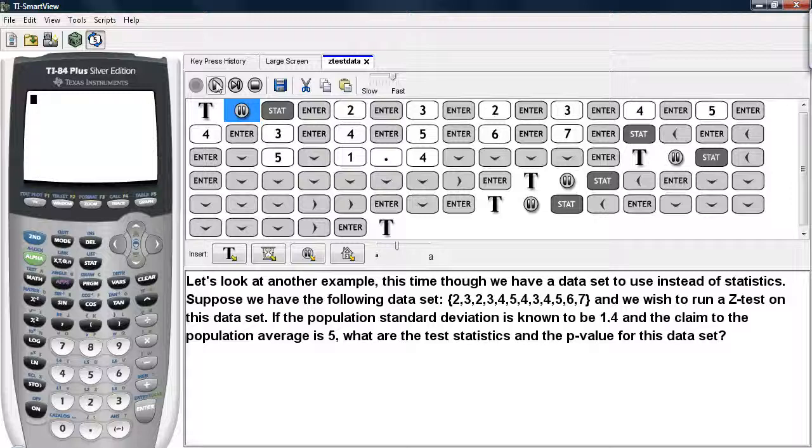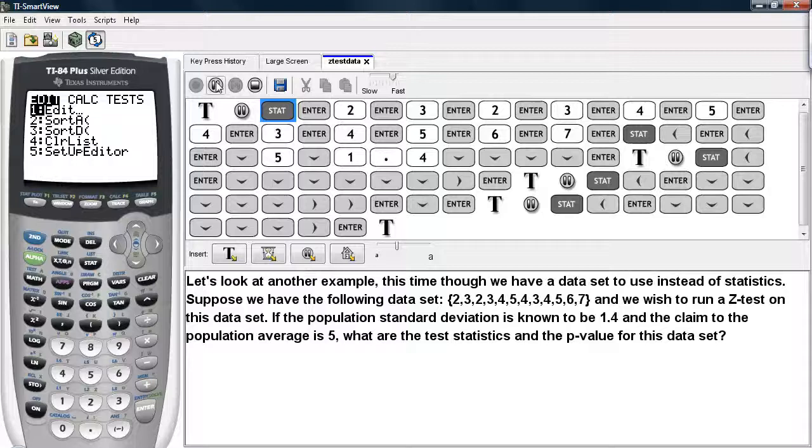If the population standard deviation is known to be, say, 1.4, and the claim to the population average is 5, what are the test statistic and p-value for this data set?